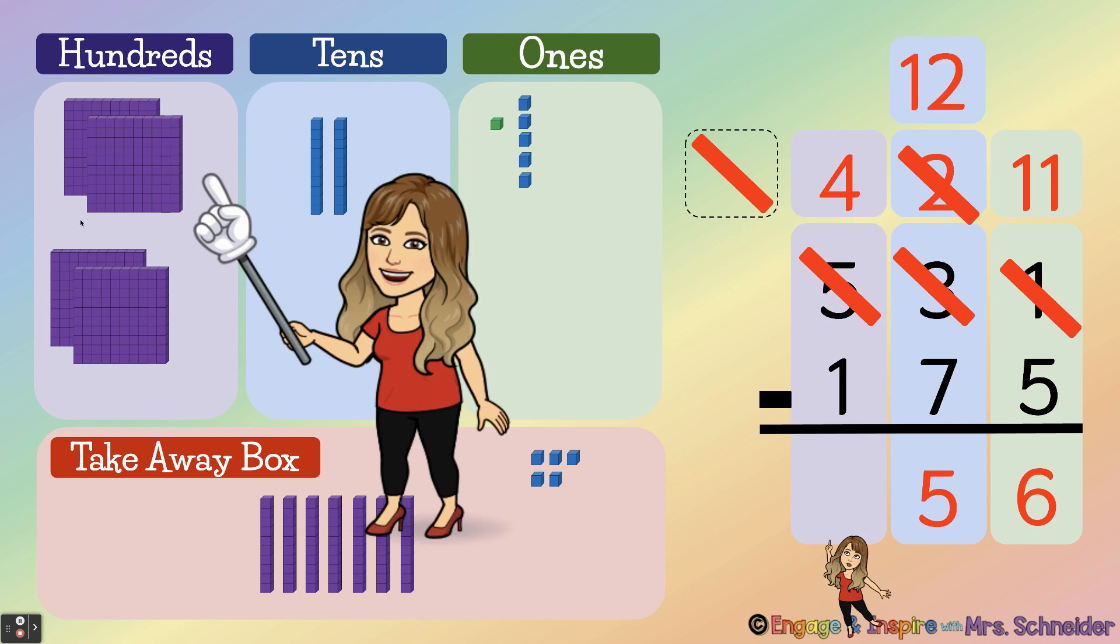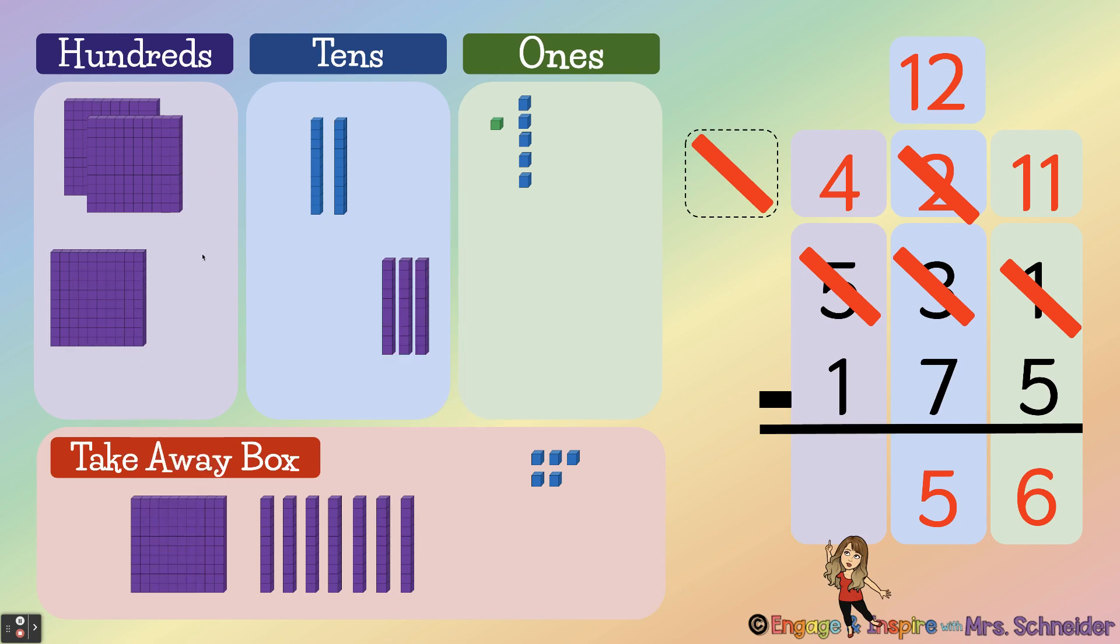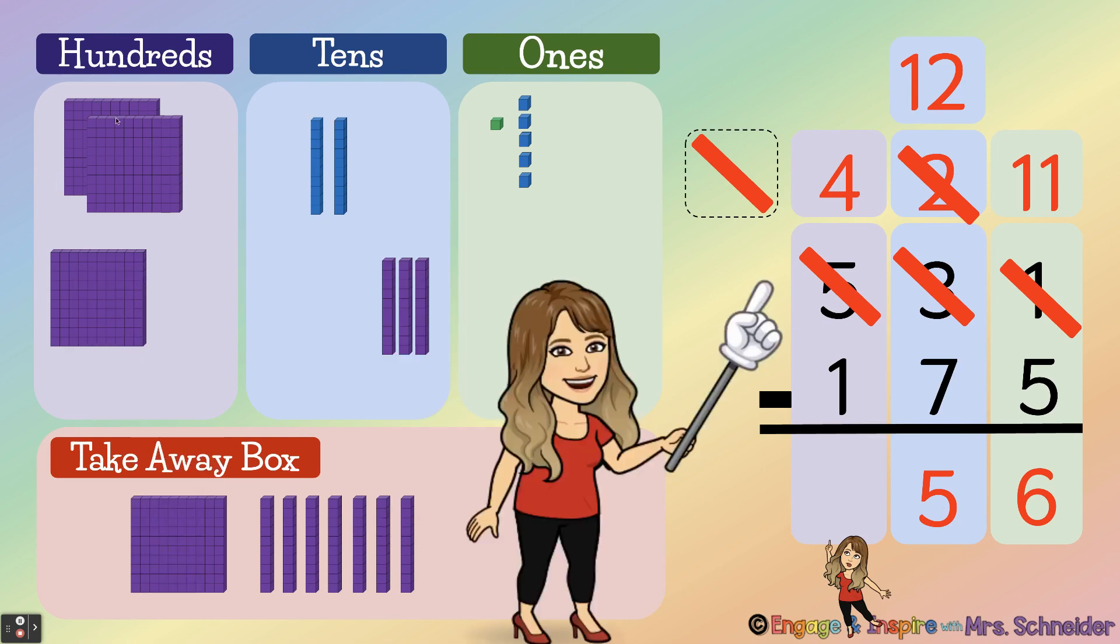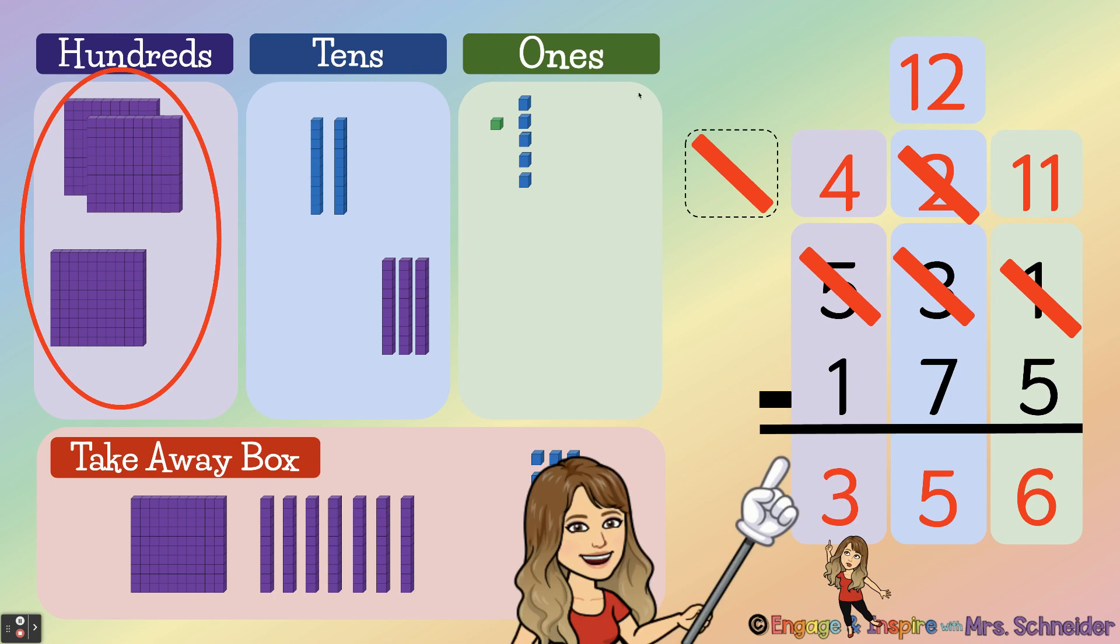Last, we're going to subtract our hundreds. We have four hundreds and we're going to take one away. There we go. All right, so how many hundreds are left? Correct, three. Because four minus one is three.